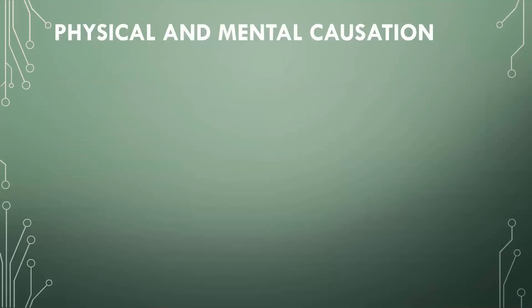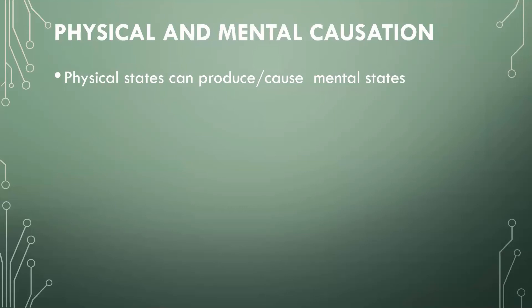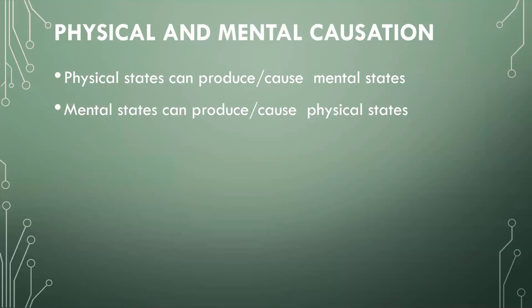Notice there is a relationship between physical states and mental states — a causal relationship between the two. Physical states can produce or cause mental states. A cut on one's finger will cause the sensation of pain. A mental state, though, can also cause or produce physical states. If one gets angry, that can increase your blood pressure — a physical state. So there are causal connections back and forth between our physical characteristics and our mental characteristics.